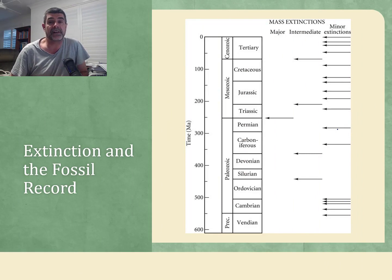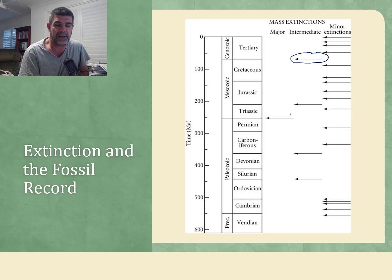The fossil record identifies some fairly significant extinctions. The Cretaceous-Tertiary boundary is when the dinosaurs disappeared, the one people are most familiar with. But it's not the most significant extinction event. The extinction between the Permian and Triassic was a major extinction event where a huge number of species disappeared from the fossil record.